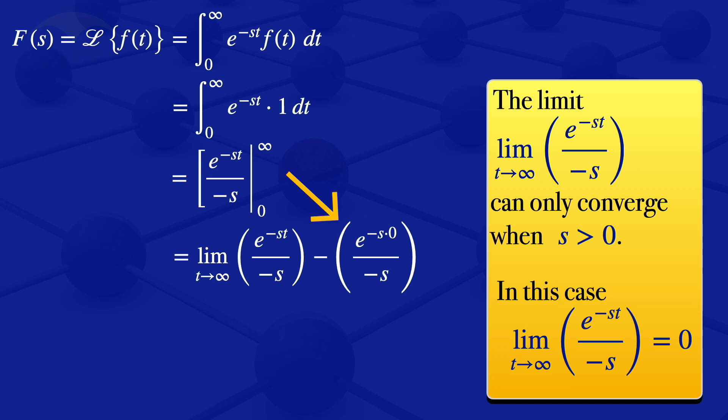So we would have 1 there, and our expression will become 0 minus 1 divided by -s. And it's only guaranteed when s is greater than 0.